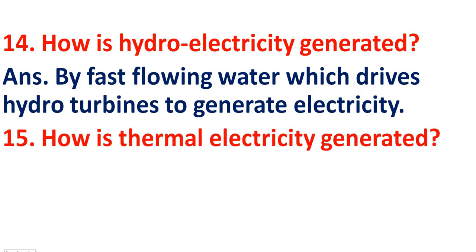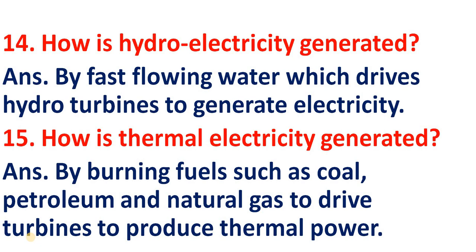How is thermal electricity generated? Thermal electricity, arthat tap vidyut kaisi utpann karti hai? The answer is: by burning fuels such as coal, petroleum, and natural gas to drive turbines to produce thermal power. Hum indhan ko jalate hai jaise koela, petroleum, aur prakartik gas, aur usko jala karke hum turbine ko chalate hai, aur turbine ke chalne se vidyut utpann hoti hai jise hum tap vidyut ya thermal power kahte hai. Aage bhi aapko aise hi important prasna aur uttar milte rahenge — agale video ka wait karein. Thank you for watching.